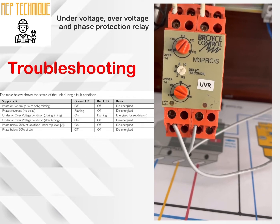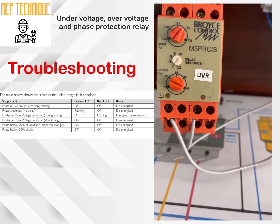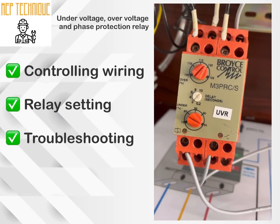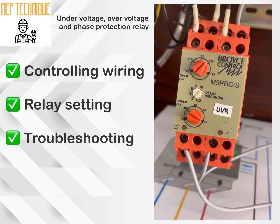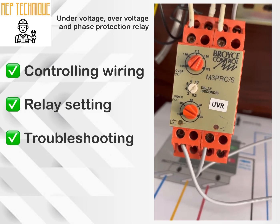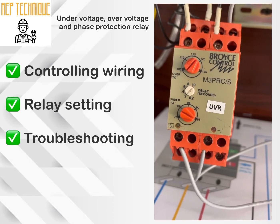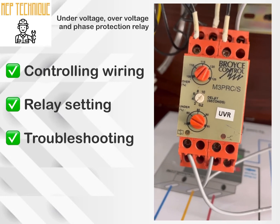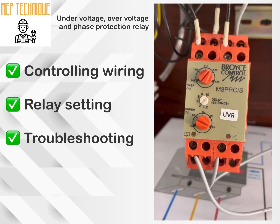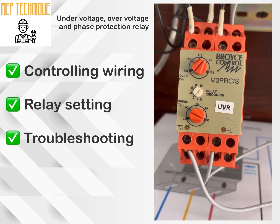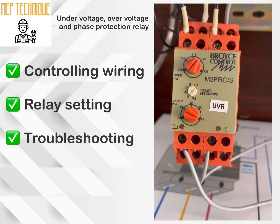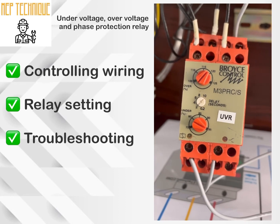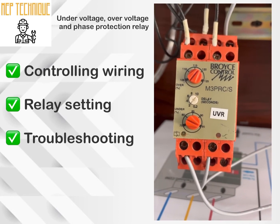We have discussed the controlling wiring of this relay and its functions. We have done the controlling wiring of a relay that can protect from phase sequence issues, under voltage, over voltage, and time delay. I hope you understood everything we discussed. I will mention the controlling diagram as well as the troubleshooting criteria in the video for your information. If you have any comments or doubts, please write in the comment box. If you have not subscribed to the channel, please subscribe, like, comment, and press the bell icon to get notifications.